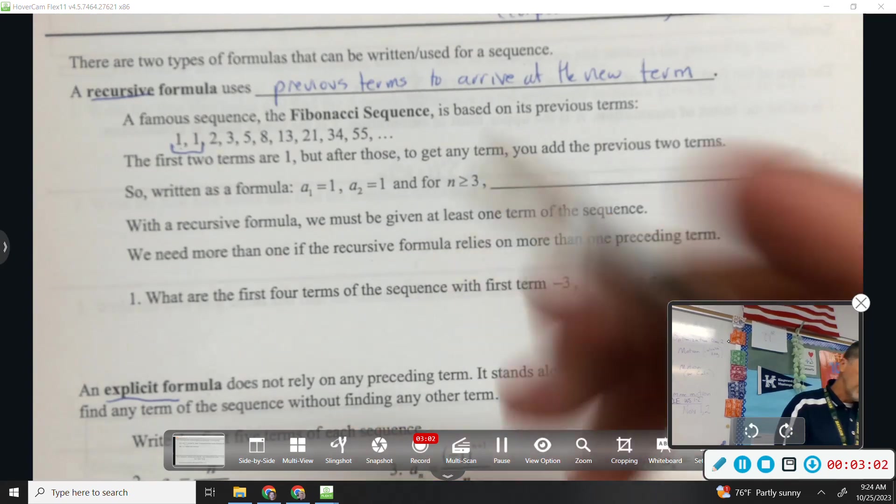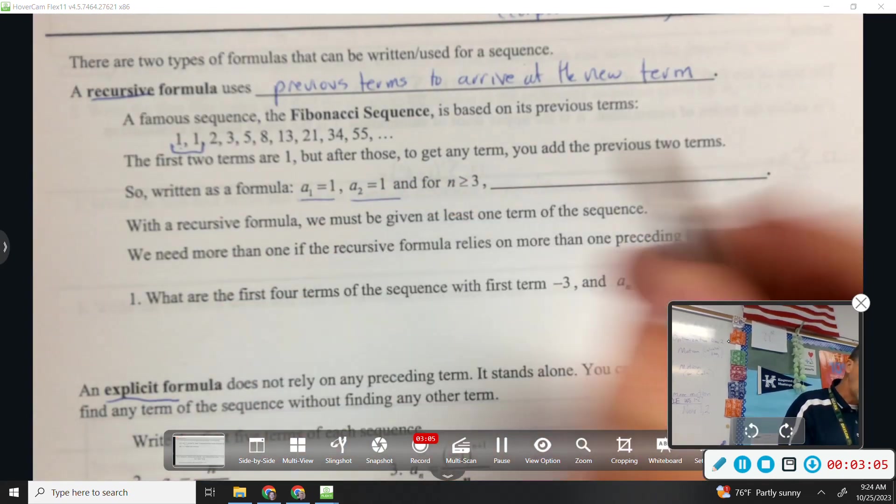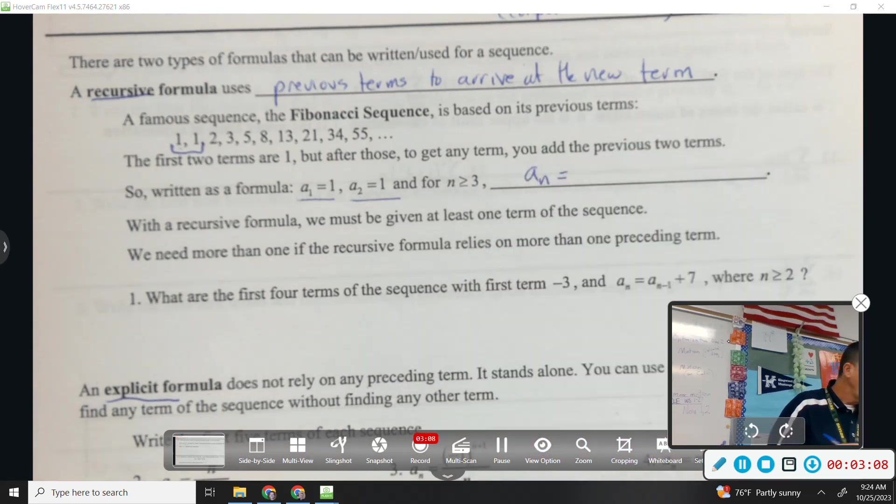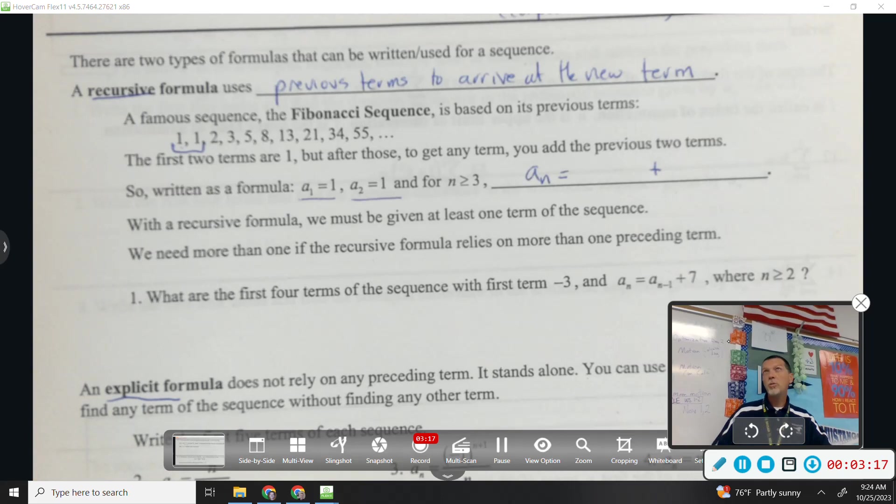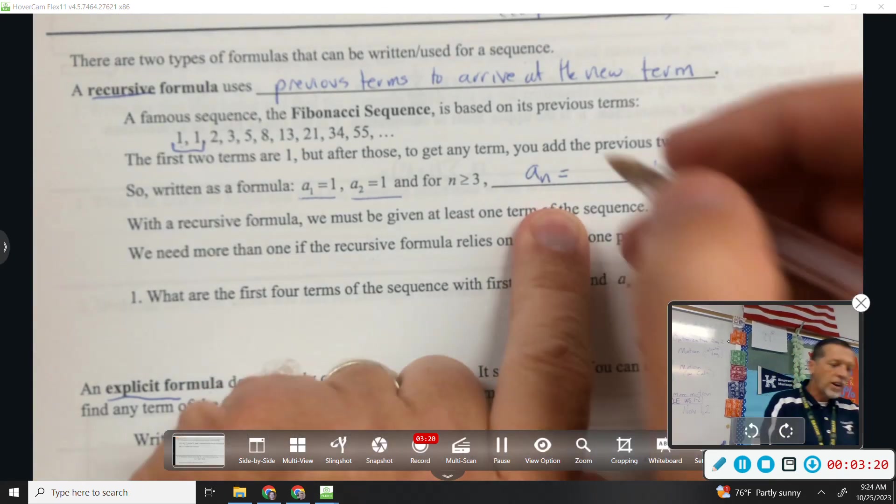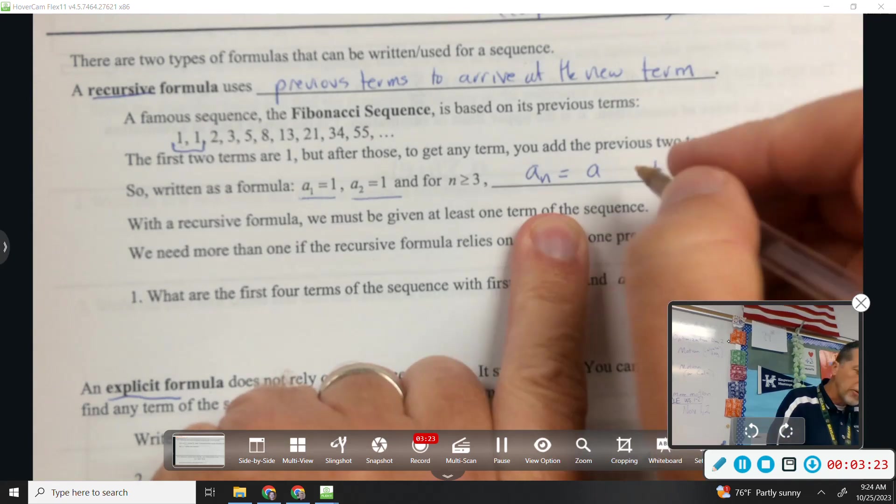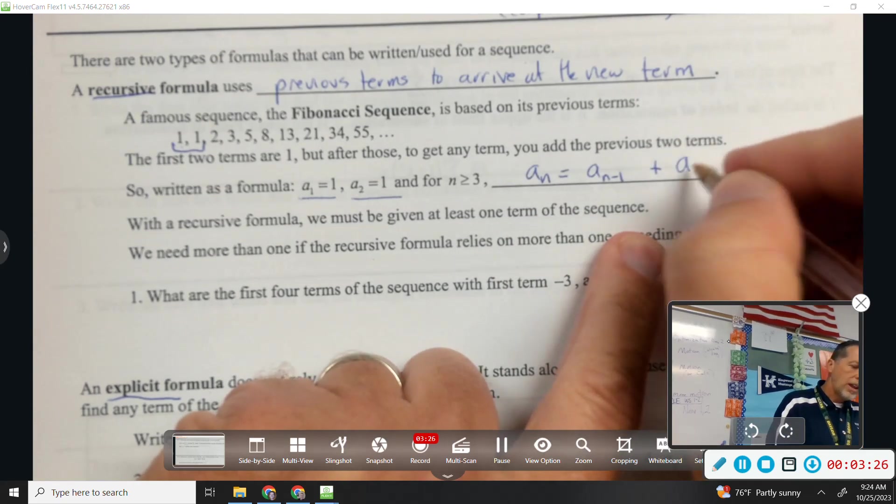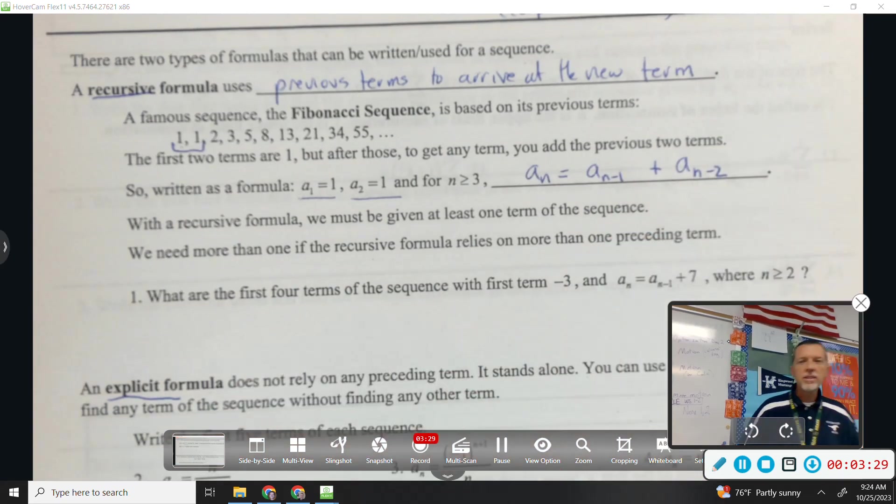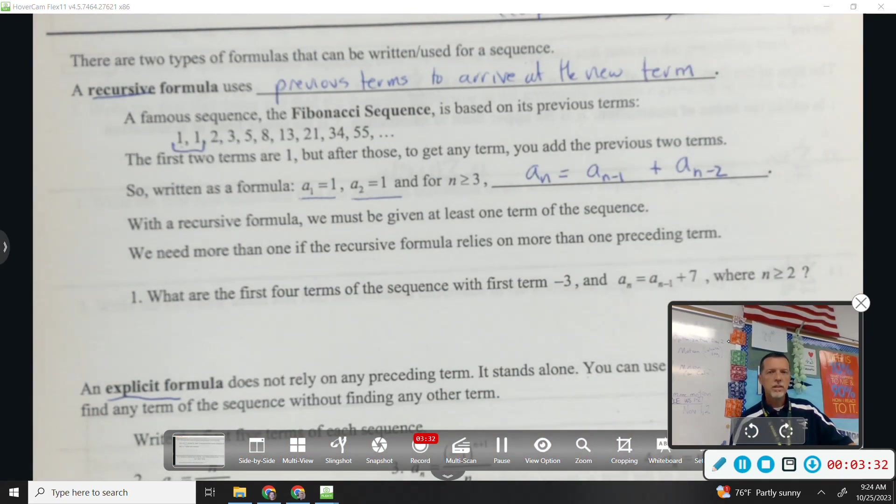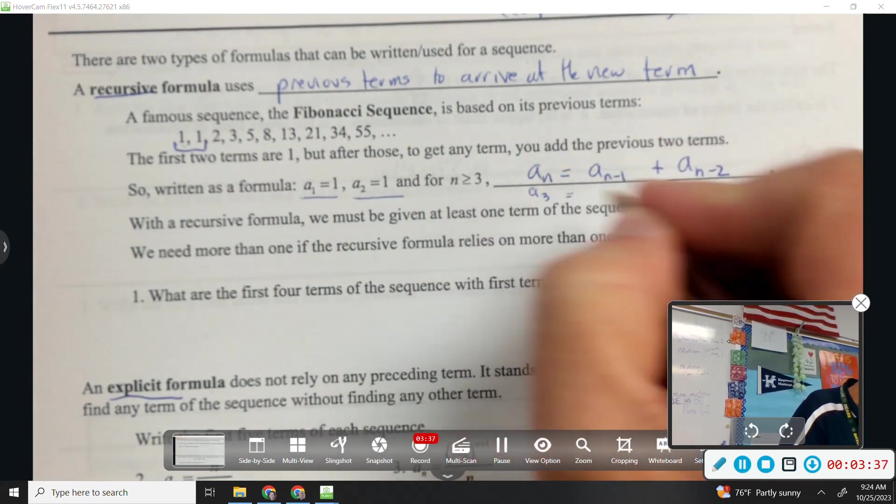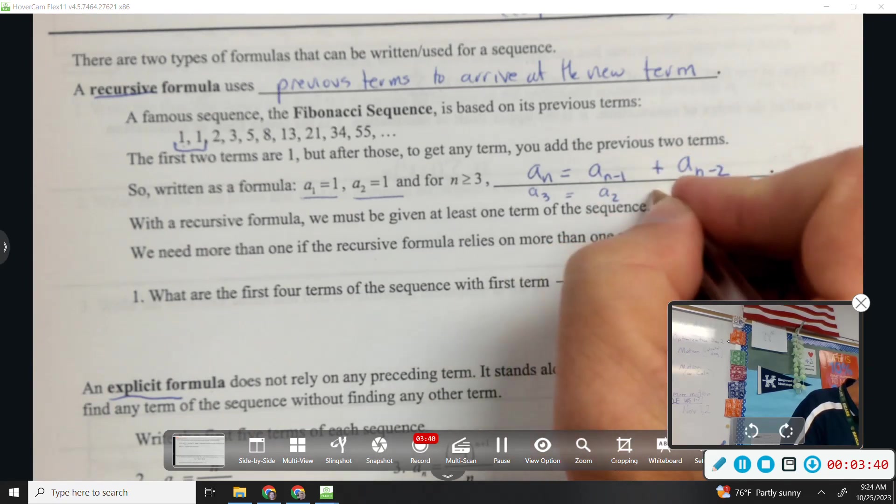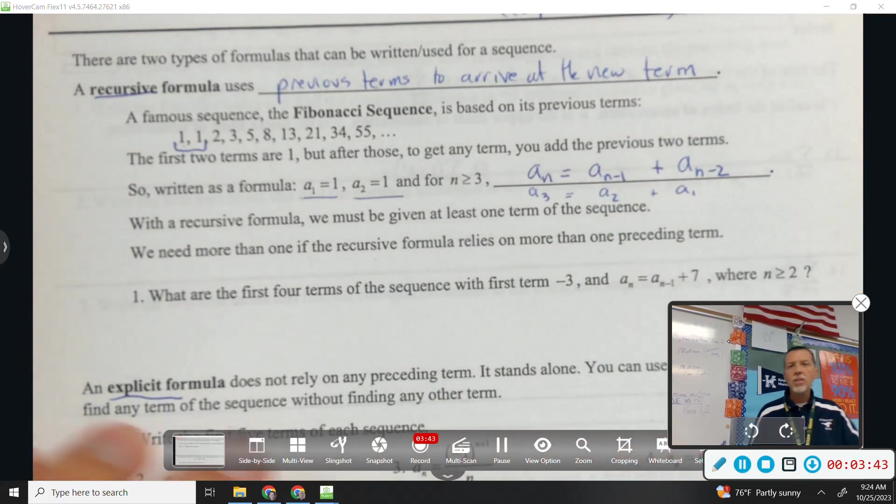So as a formula, you have to say that a1 is 1, a2 is 1. After that, a sub n, the next term, is the sum of the two previous terms. So if you're at a_n, the term behind that one is n minus 1. And two terms back would be n minus 2. And so if you think about, what is a3? So if n is 3, 3 minus 1 is 2, 3 minus 2 is 1. So yeah, a3 is a2 plus a1.